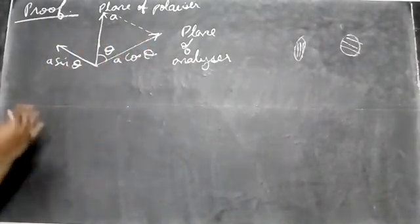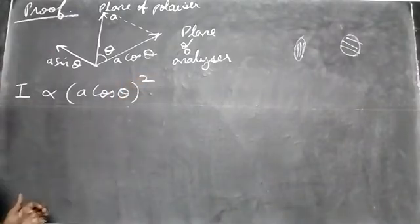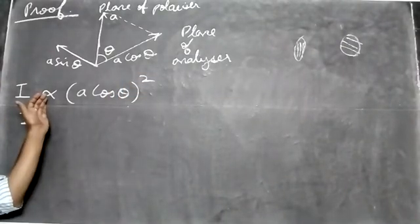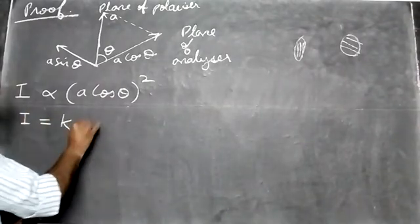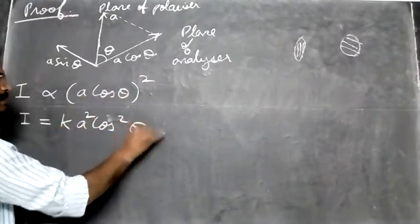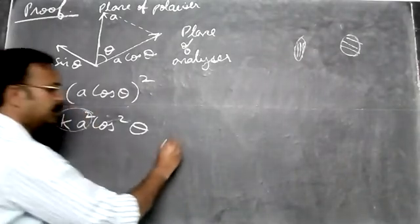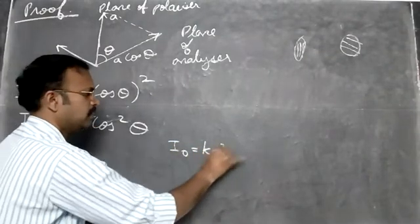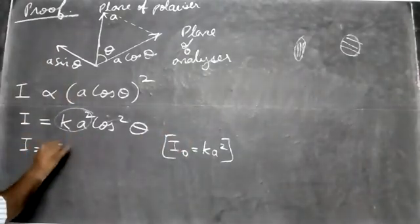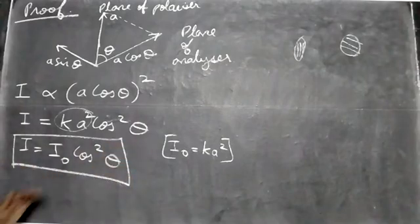Only A cosθ is in the plane of the analyzer, so only that component will pass through. The intensity of light is directly proportional to (A cosθ)². Removing the proportionality sign: I = k · A² · cos²θ. Now k · A² equals I₀, so substituting: I = I₀ cos²θ. This is the statement of Malus's Law.